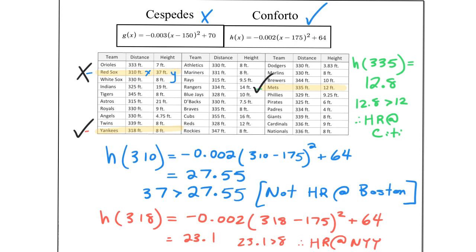If it is, you know it's a home run. If not, if it's anything less than that height, you know it's not a home run. Thank you guys for watching, and hopefully this will help for Part 2 of your quadratic function project.